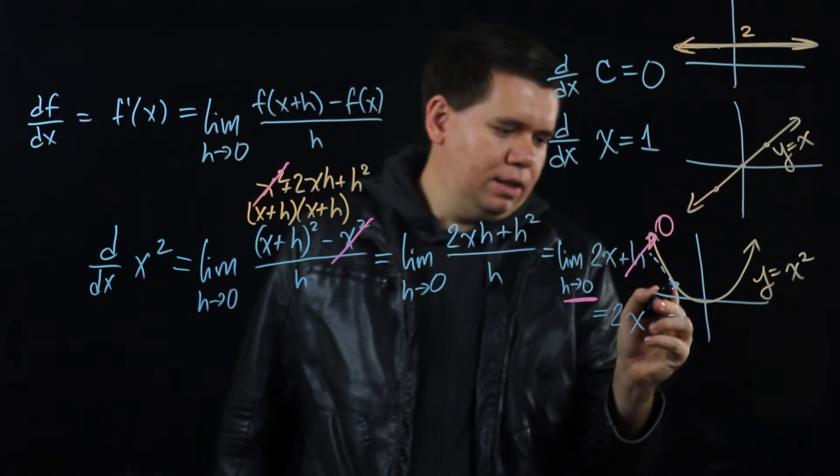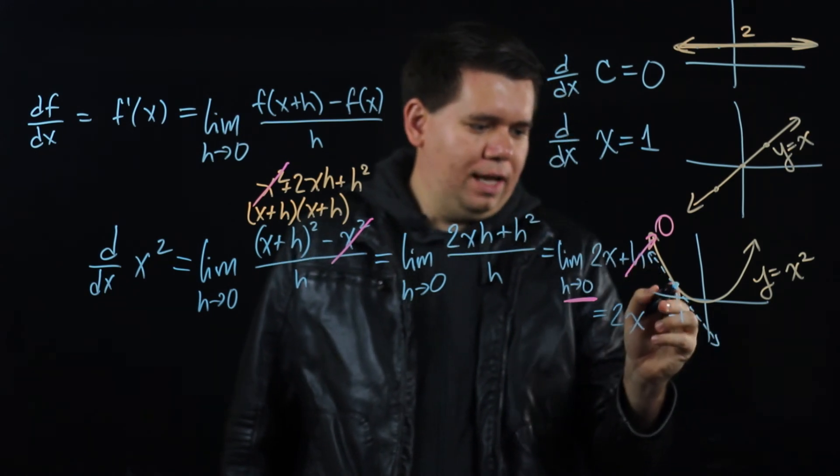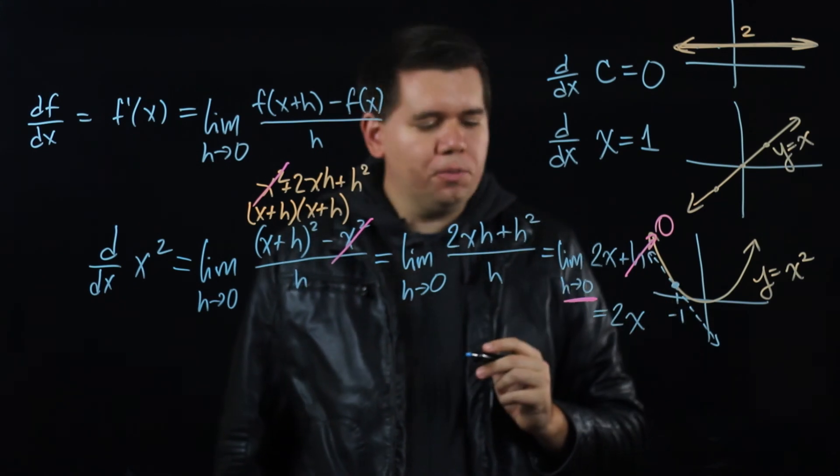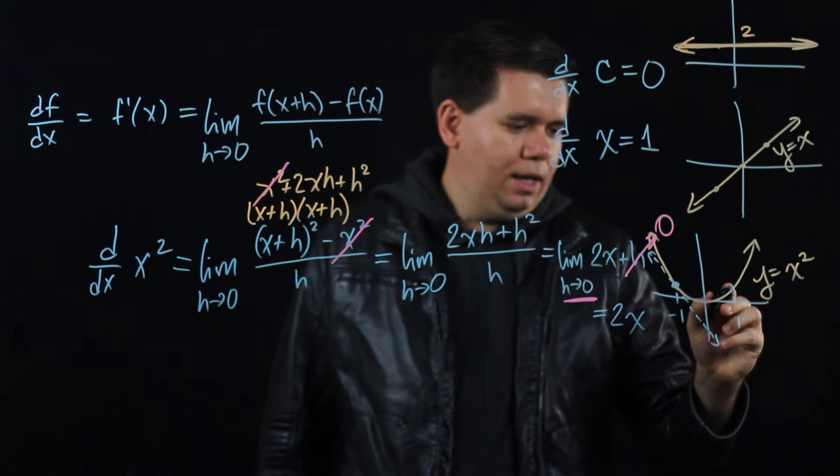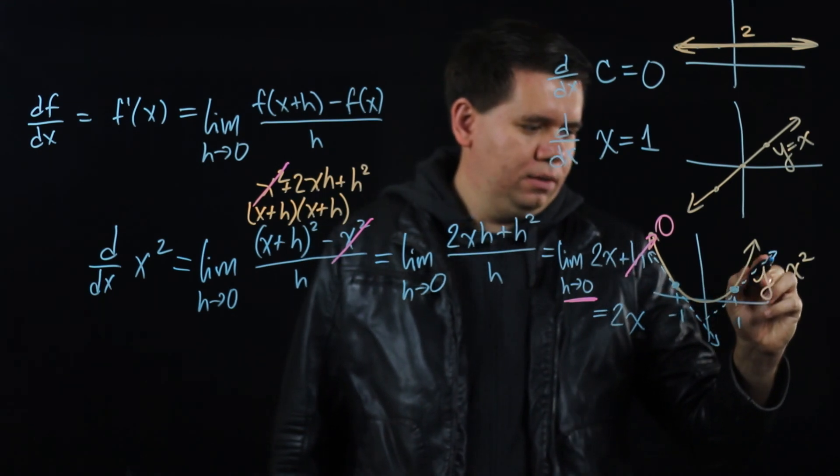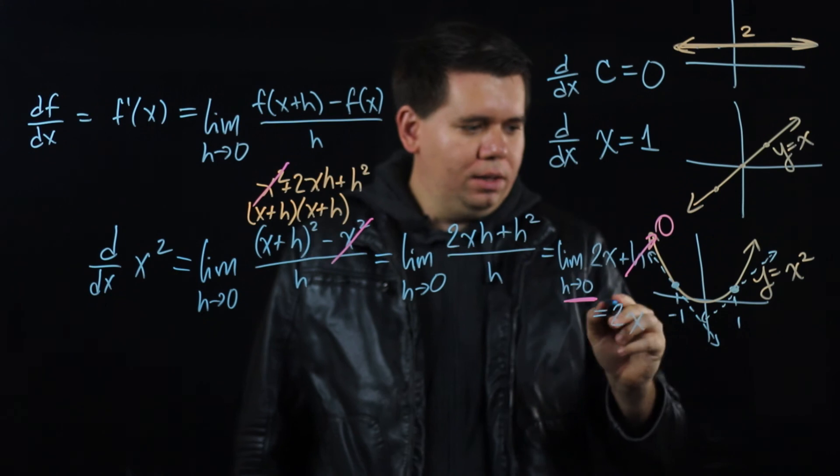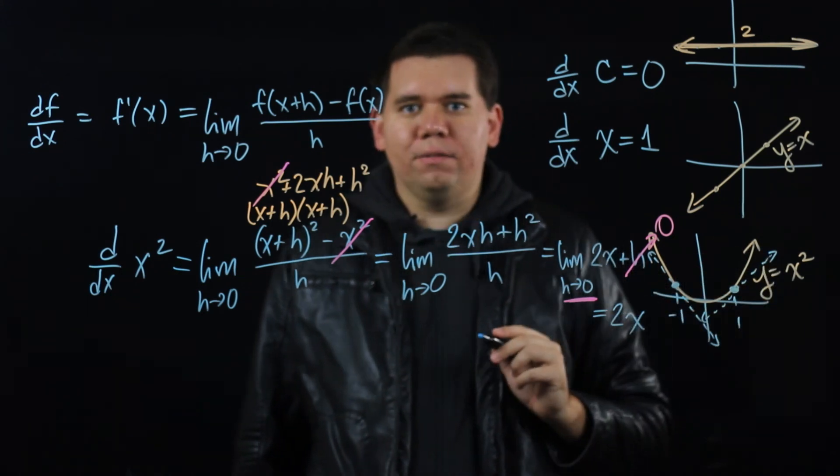If you were to go somewhere like positive 1 and you look at the slope of the tangent line to that point, plug in positive 1, it would have a slope of positive 2.